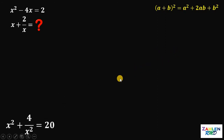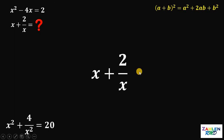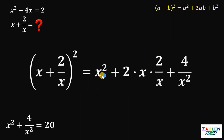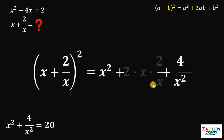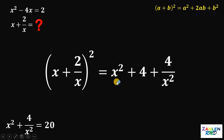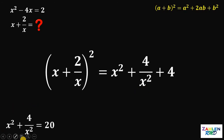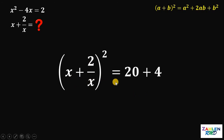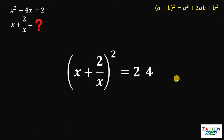Let's set aside this result for a while and focus on the expression we want to evaluate. We're going to square the expression x plus 2 over x. (x plus 2 over x) squared equals x squared plus 2 times x times 2 over x plus 4 over x squared. The middle term simplifies — x cancels, giving us 2 times 2 equals 4. Rearranging, we have x squared plus 4 over x squared, which equals 20. So (x plus 2 over x) squared equals 20 plus 4, which gives us 24.